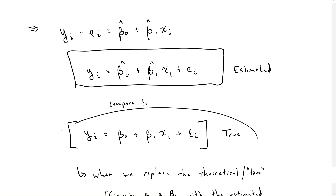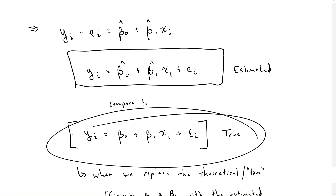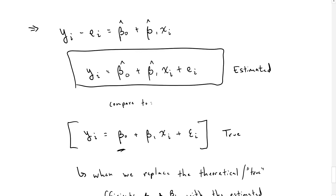We started with a true regression equation looking something like this, and because we can't observe these betas and this error term in practice, what we need to do is estimate all of those things. Beta 0 hat and beta 1 hat are the estimated effects of beta, and ei is the residual, which is the difference between the true outcome and the observed outcome. And in a way, it's something similar to an estimate of epsilon i, although a little different.